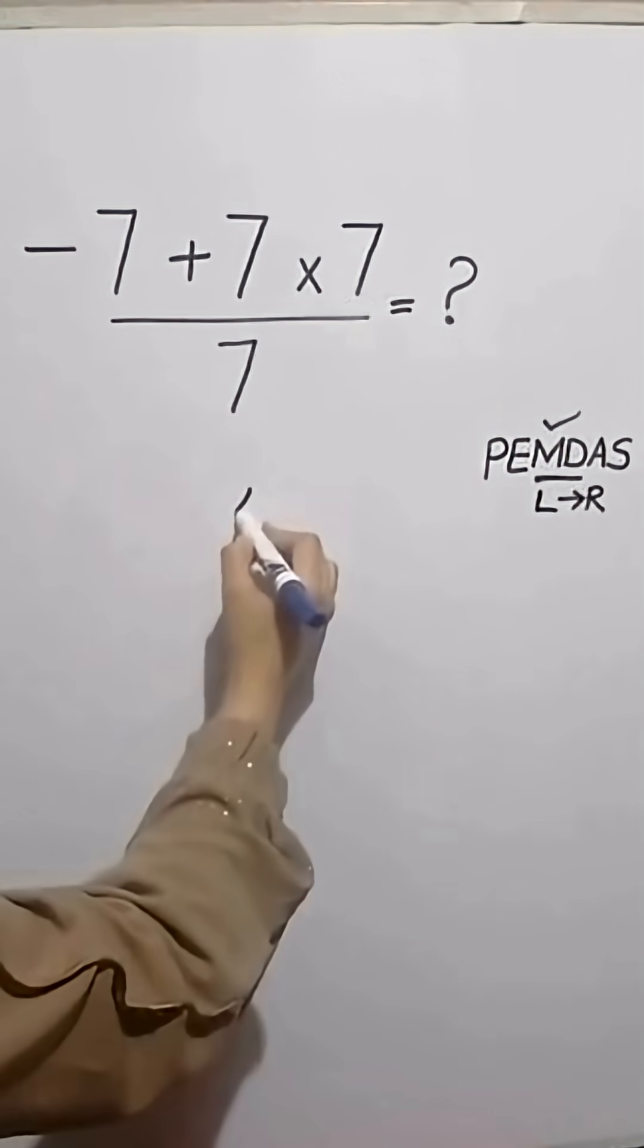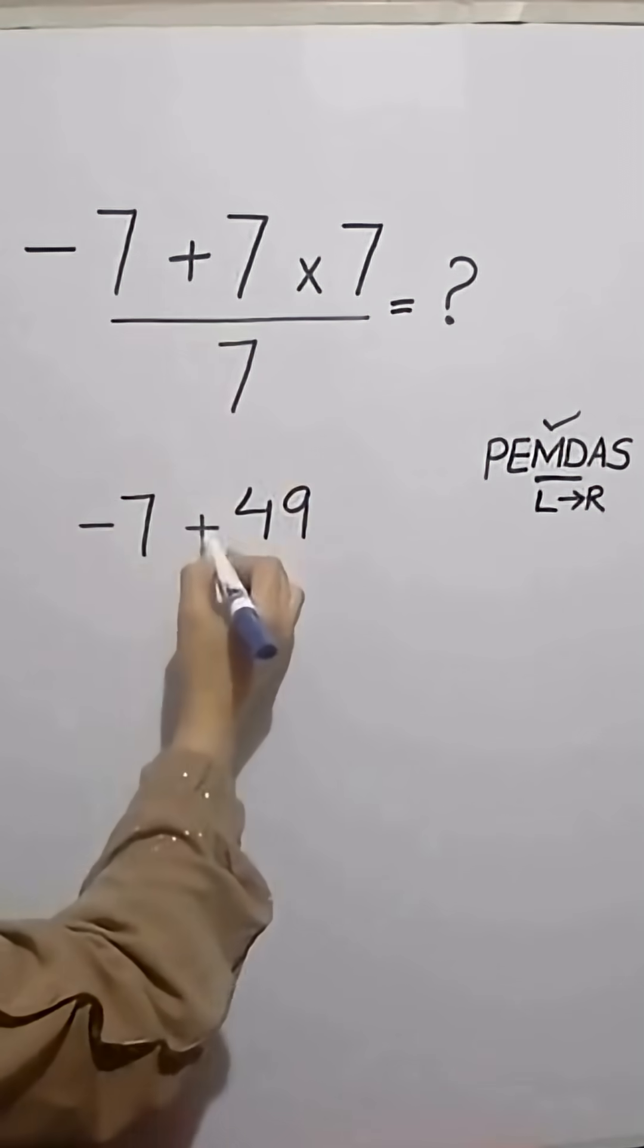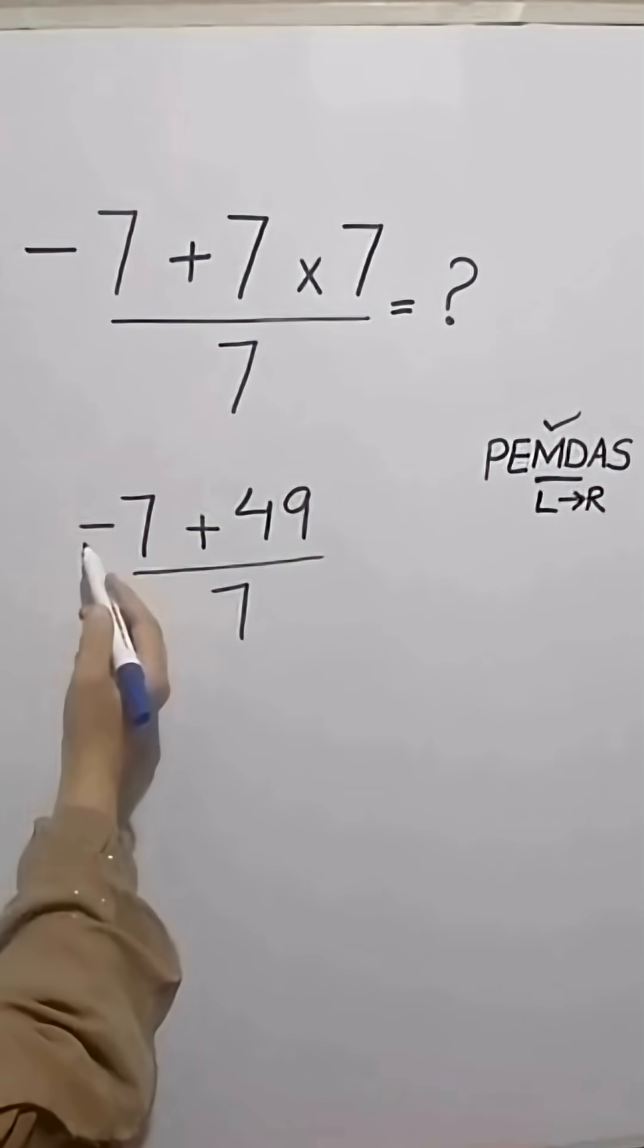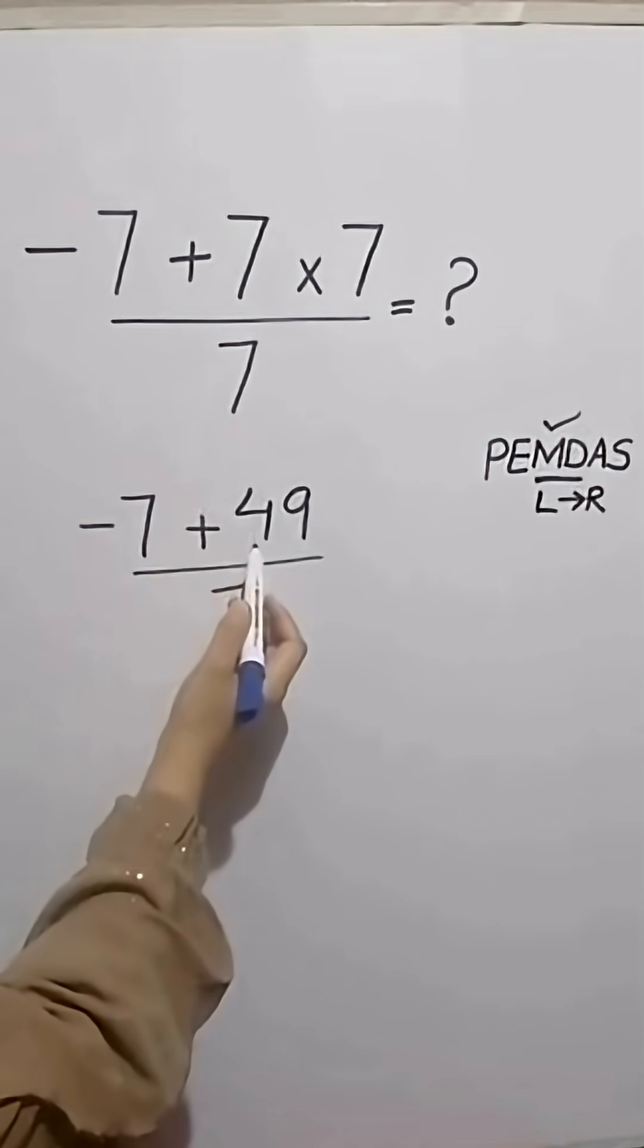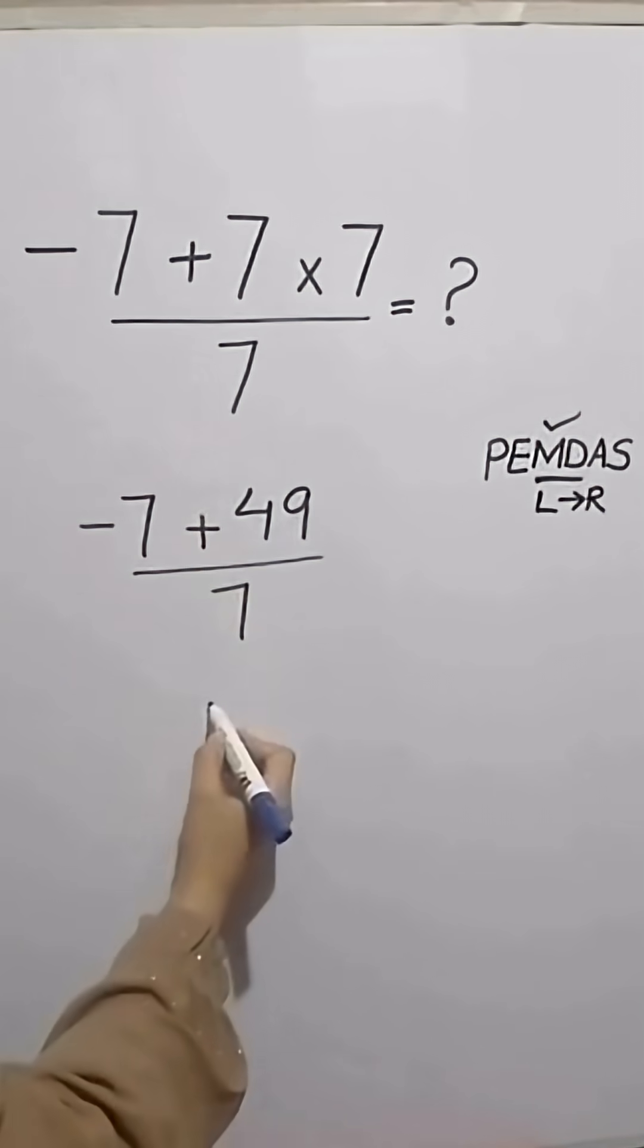7 times 7 is equal to 49. Now the expression becomes minus 7 plus 49 by 7. Now we have to do this addition. Minus 7 plus 49 is the same as 49 minus 7, which equals 42.